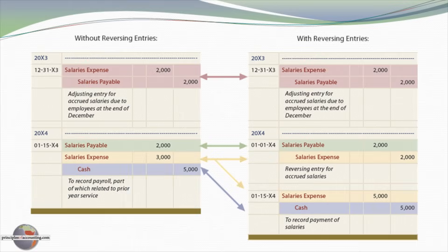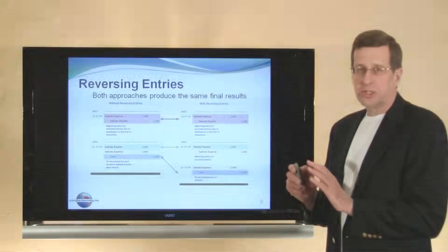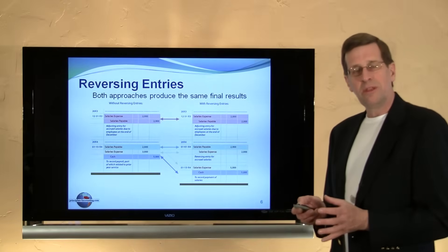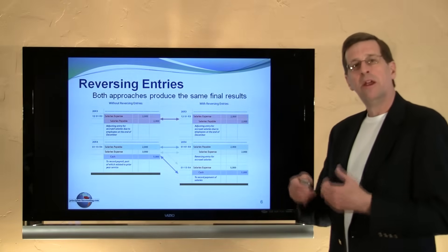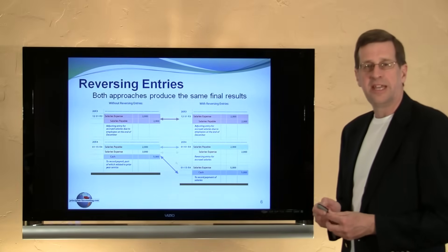In this next slide, we have a comparison: on the left-hand side are the entries without reversing entries, and on the right-hand side are the same entries with reversing entries. Looking at these and comparing them, with arrows drawn to show that in the final analysis all accounts are treated in an identical fashion — for example, salaries payable shows debits of $2,000 beginning of the new year in both cases. Over the life cycle of the transaction, all accounts are exactly the same. There is no difference in accounting outcomes with or without reversing entries — they are simply a tool to facilitate the accounting process.